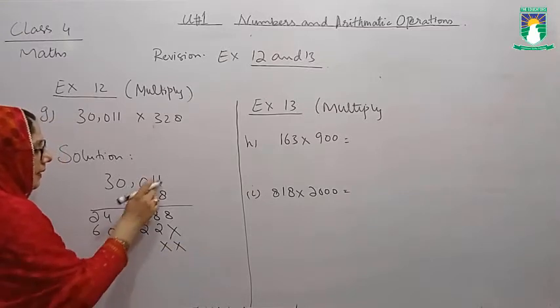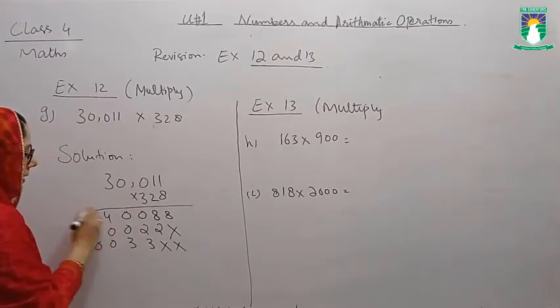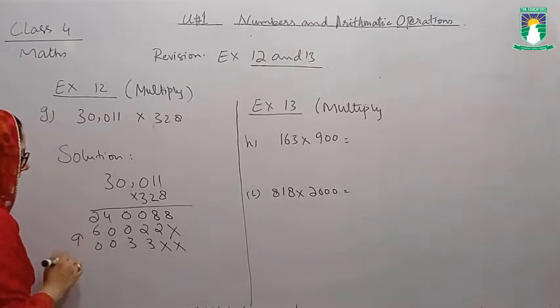Now for 100, we put 2 crosses. 3 ones are 3, 3 ones are 3, 3 zeros are 0, 3 zeros are 0, and 3 threes are 9.